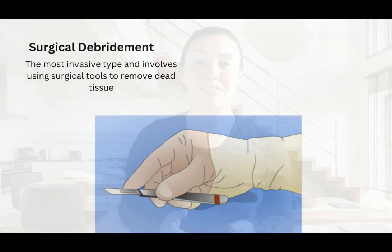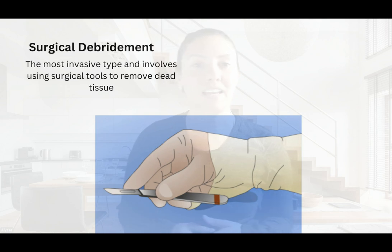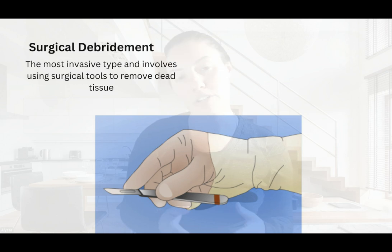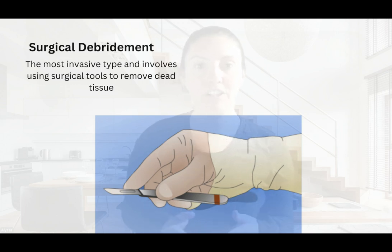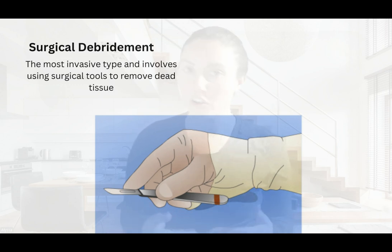Then we have surgical debridement. It is the most invasive type and involves the use of surgical tools to remove dead tissue. It's usually performed in a hospital or clinical setting for wounds that are large, severely infected, or not responding to other methods. While it's the quickest method, surgical debridement can be painful and carries more risks because it involves cutting into the tissue. It's typically used when other debridement methods aren't enough.